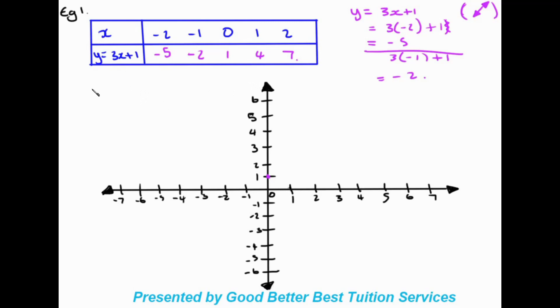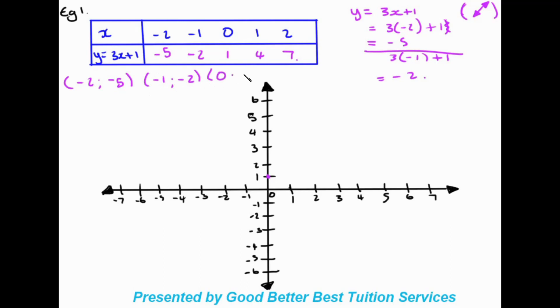Now that we've worked out the table, let's write our coordinate pairs in the form x then y. Our first plotting point is negative 2 and negative 5. Second is negative 1 and negative 2. Third plotting point is 0 and 1. Fourth is 1 and 4. And fifth is 2 and 7.